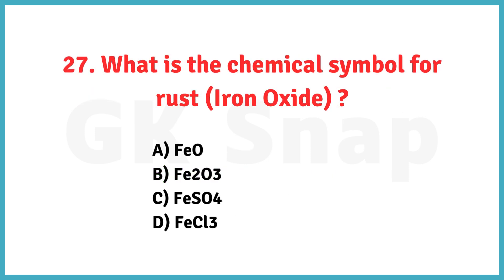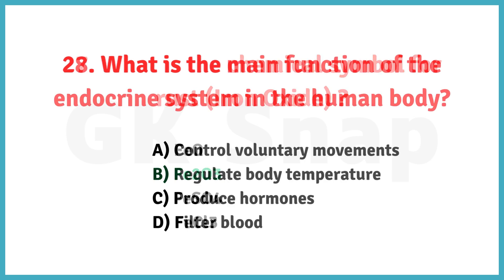What is the chemical symbol for rust? Correct answer is option B: Fe2O3.